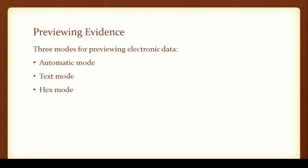For previewing evidence, there are three modes available in FTK Imager for preview of electronic data. The first is automatic mode, the second is text mode, and the third is hex mode. In automatic mode, whichever mode is suitable for the file, it is displayed accordingly — either text mode or hex mode. In text mode, the content of the file, if possible, is shown in Unicode value. And in hex mode, the content of the file is shown as a stream of hexadecimal values.